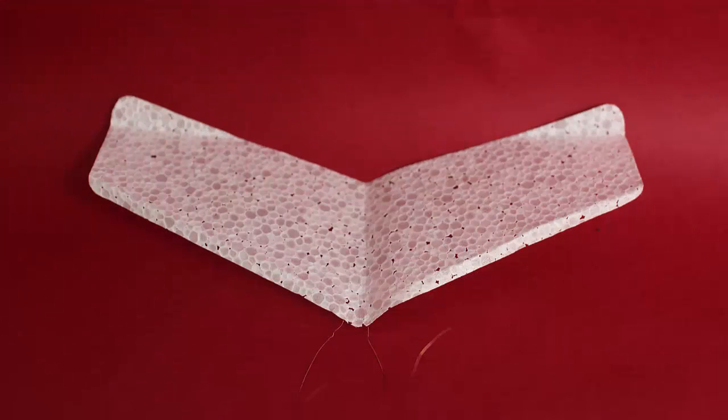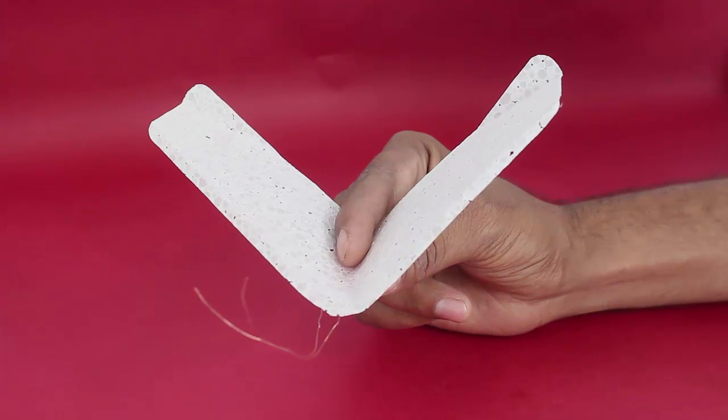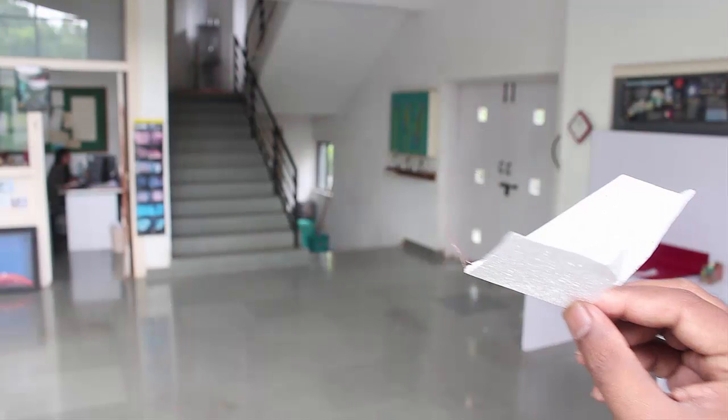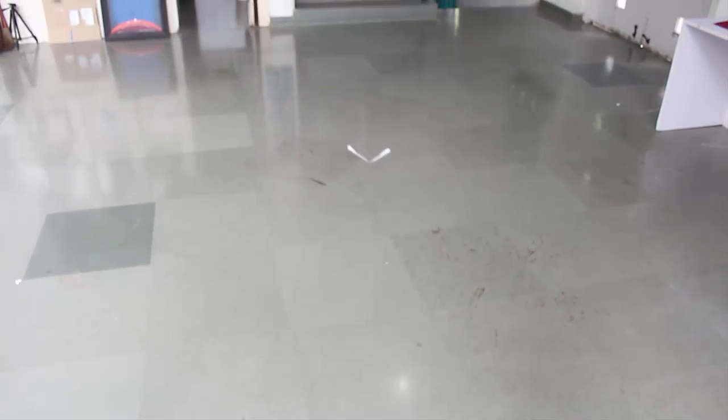And now fold the glider at an angle around its midline. Hold it as shown and chuck it horizontally. The glider will glide gracefully and land after travelling a fair distance.